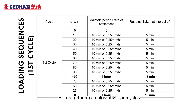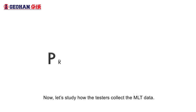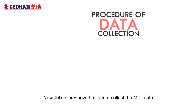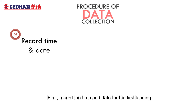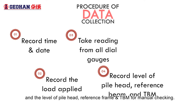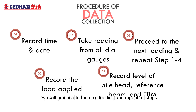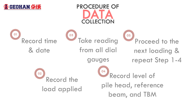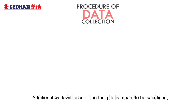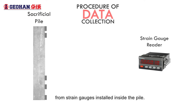Here are examples of 2 load cycles. Now let's study how the testers collect the MLT data. First, record the time and date for the first loading. Next, record the load applied, the readings of all dial gauges, and the level of the pile head, reference frame, and temporary benchmark for manual checking. We will then proceed to the next loading and repeat all steps. Additional work will occur if the test pile is meant to be sacrificed, because we need to take the strain reading from the strain gauge installed inside the pile.